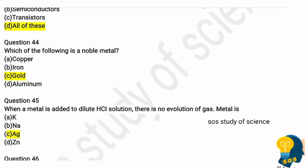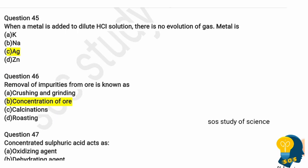Question 43: Which of the following is a noble metal? Options are copper, iron, gold, and aluminium. The correct option is gold. Question 45: When a metal is added to dilute hydrochloric acid, there is no evolution of gas — which metal is it? The correct answer is silver, because when silver is added to hydrochloric acid there is no liberation of gas, whereas sodium, potassium, and zinc all release hydrogen gas when added to hydrochloric acid.